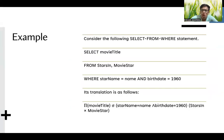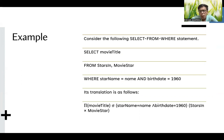Let us take an example of a SELECT-FROM-WHERE statement: SELECT movie_title FROM Stars, MovieStar WHERE star_name = name AND birth_date = 1960. This can be translated into relational algebra as: π_{movie_title}(σ_{star_name=name ∧ birth_date=1960}(Stars × MovieStar)), where we use the Cartesian product of the two tables.